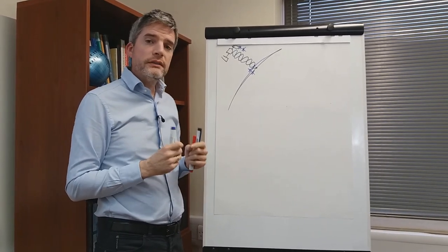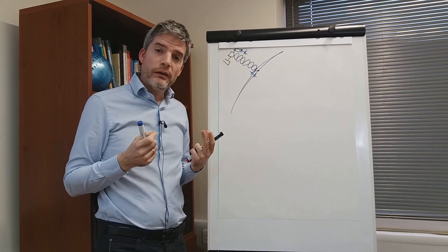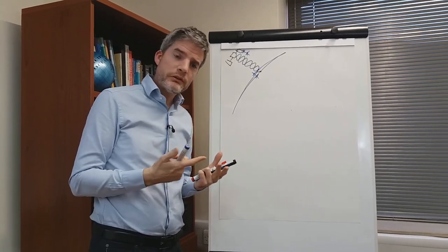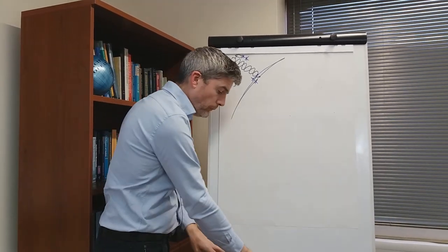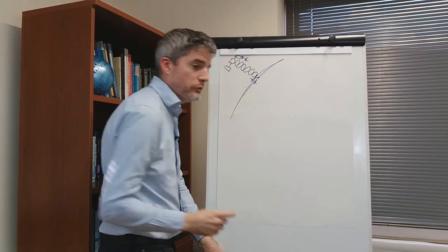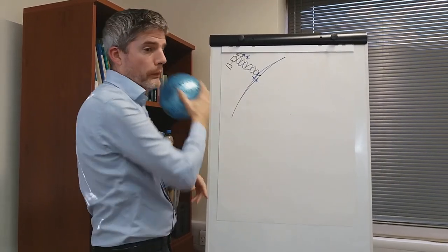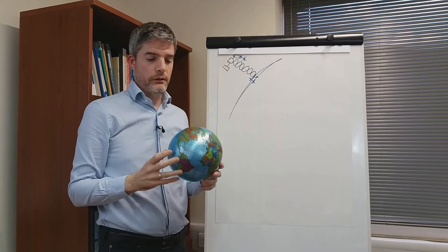So what is the displacement that we are measuring exactly? What is the direction of the displacement? So to explain that it's useful to know a bit about the orbit of the satellite.